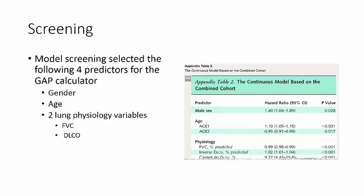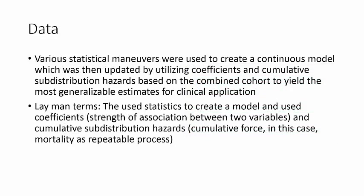Looking at the continuous model in the combined derivation and validation cohort, male sex had a hazard ratio of 1.4. Age and the physiological variables — FVC and DLCO — also had significantly high hazard ratios. Various statistical maneuvers were used to create this continuous model, updated using coefficients and cumulative sub-distribution hazards based on the combined cohort to produce the most generalizable estimates for clinical interpretation.